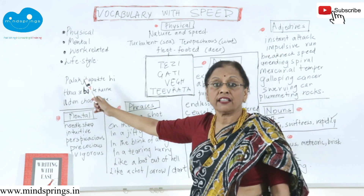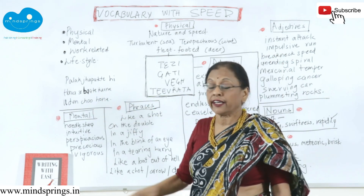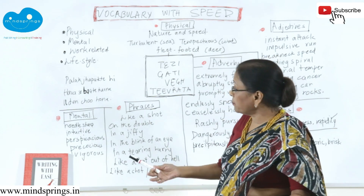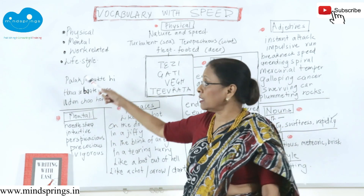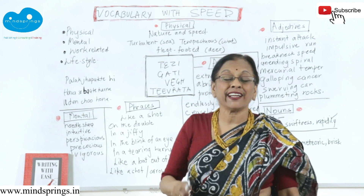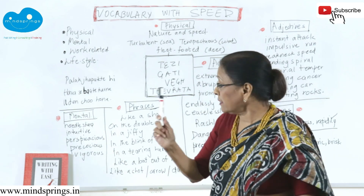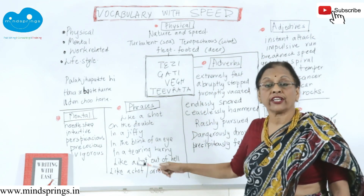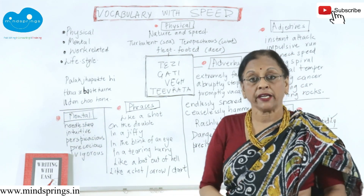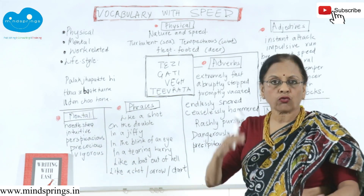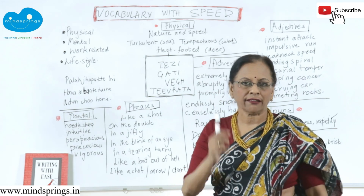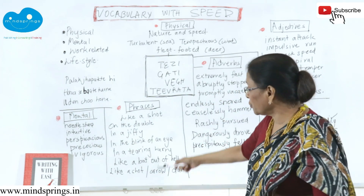In Hindi you have sayings like 'palak jhapakte hi', 'hawa se baatein karna', 'udanchoo ho jana' — these are mohavare related to speed. In the same way, English has a whole bunch of phrases related to speed. For example, 'he went out of the room like a shot' — meaning like how a bullet goes out of a gun.